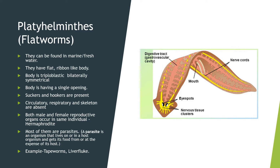Circulatory, respiratory, and skeletal systems are absent. Both male and female reproductive organs occur in the same individual, so they are called hermaphrodites. Most of them are parasites — a parasite is an organism that lives in a host organism and gets food at the expense of that host. Examples are tapeworms and liver fluke.